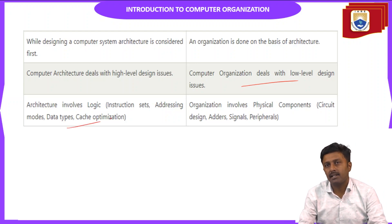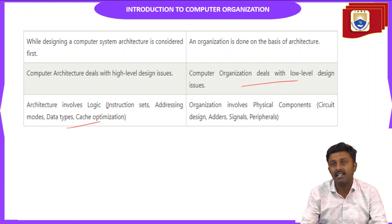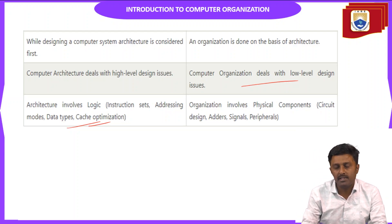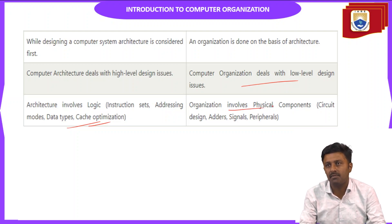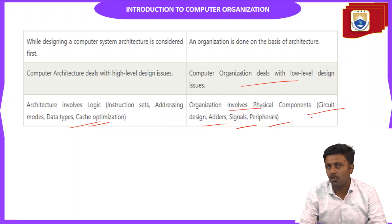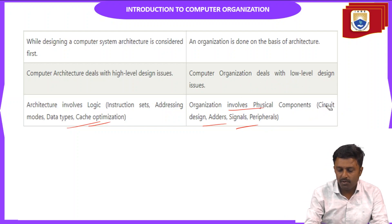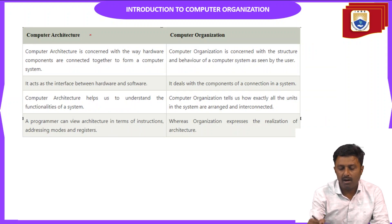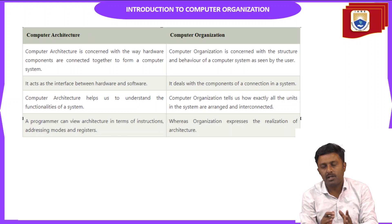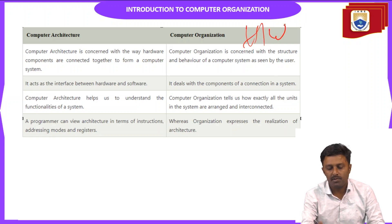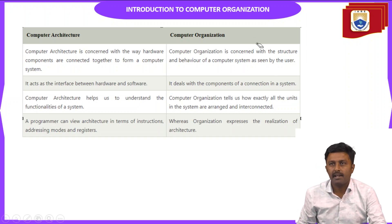Computer architecture deals with high-level design issues while computer organization deals with low-level design issues. Architecture involves logical instructions, addressing modes, data types, and cache — the programmer's point of view. Organization involves physical components: how they are connected, adders, signals, and peripherals like input and output devices.